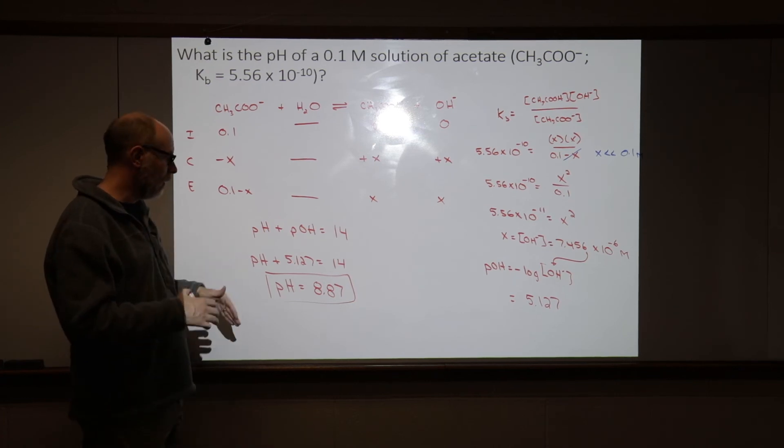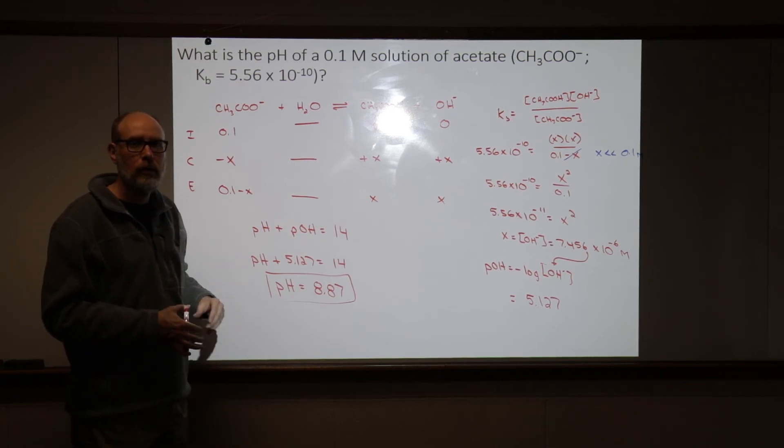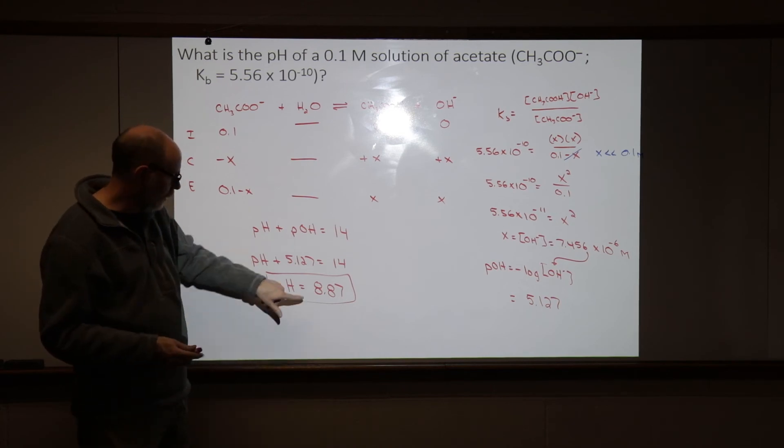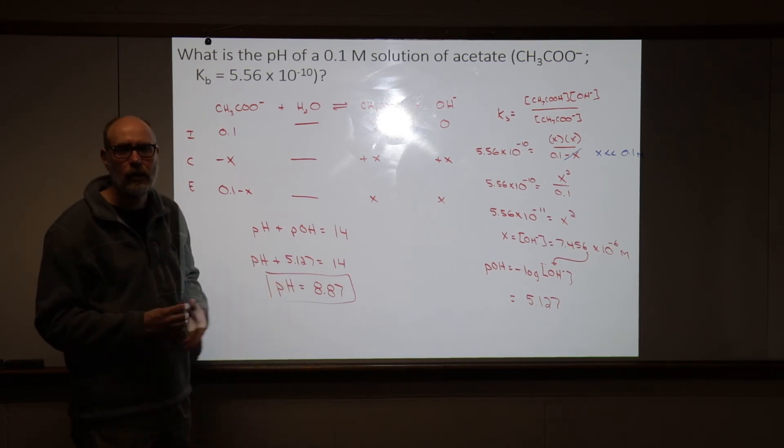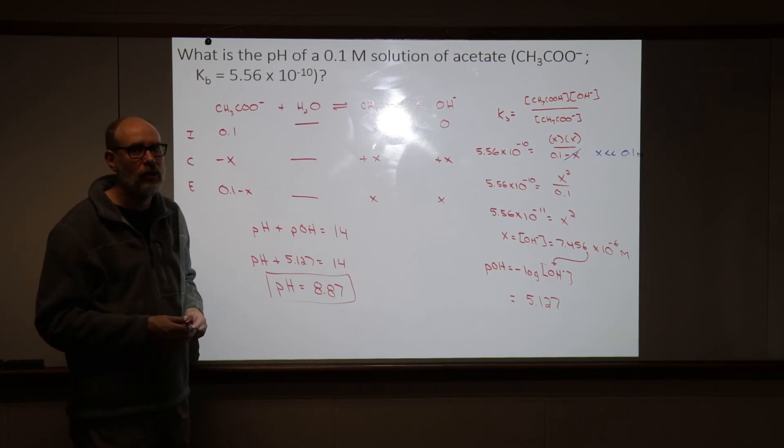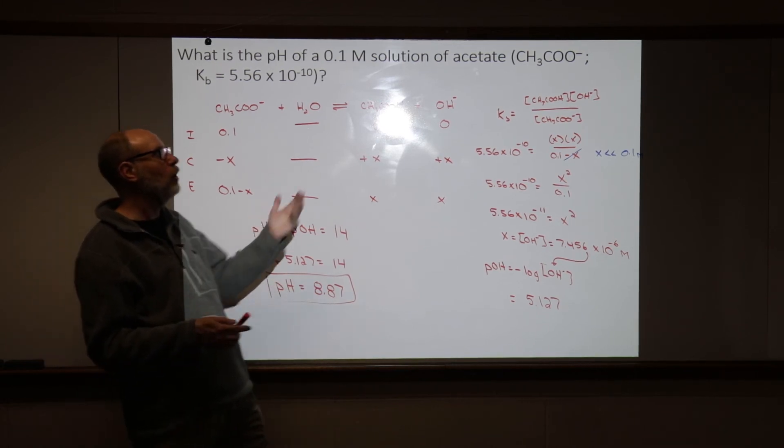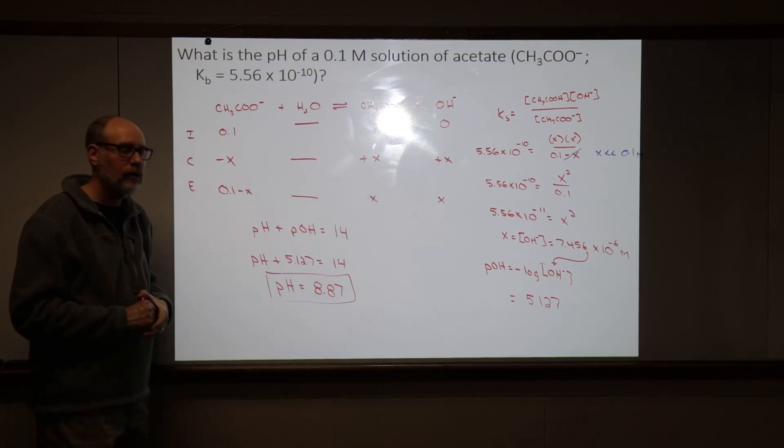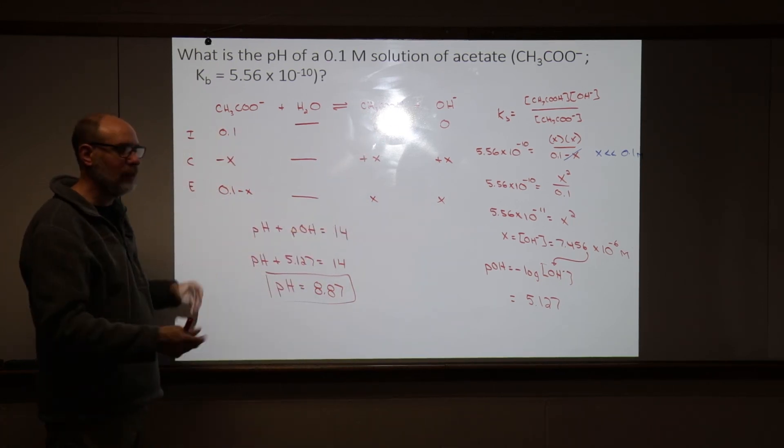If the pH is above 7, all right, that would give us an indication that there would be a base in that solution. And so we get a pH of close to 9. Not nearly as high as it was for the sodium hydroxide solution, but it makes sense because we don't have a strong base. We have a weak base in this case. So, this answer makes complete sense.